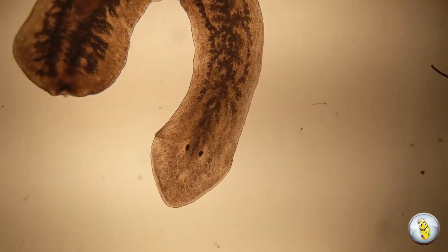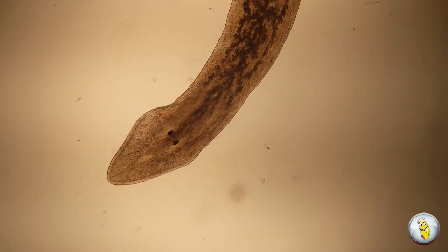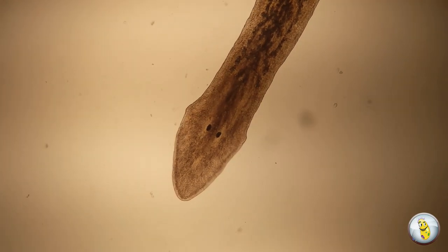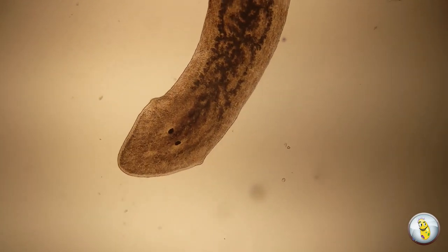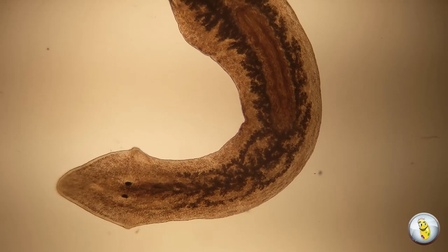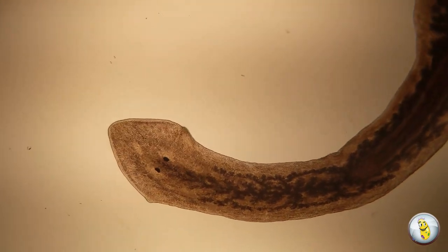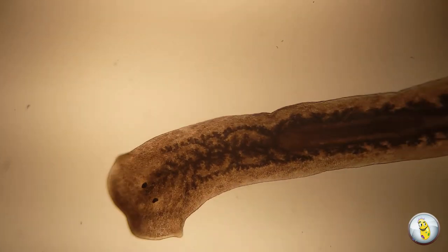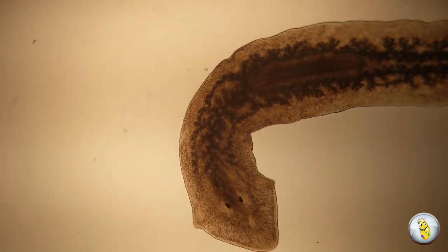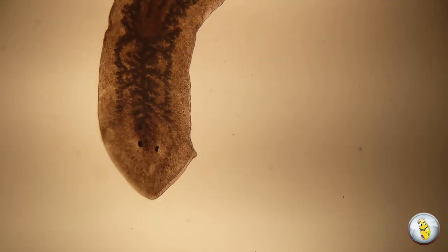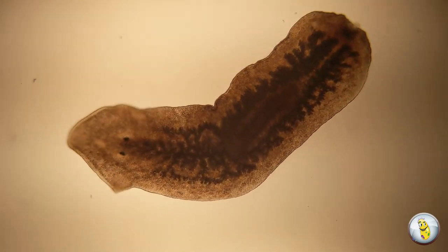For my experiment, I decided to take a planarian that was about 8 to 10 millimeters long and cut it into three parts. I cut the head off and the tail off, which left a middle body part. And I documented every other day or so the sort of changes that I saw. And I was amazed, as I think you will be, at the result.